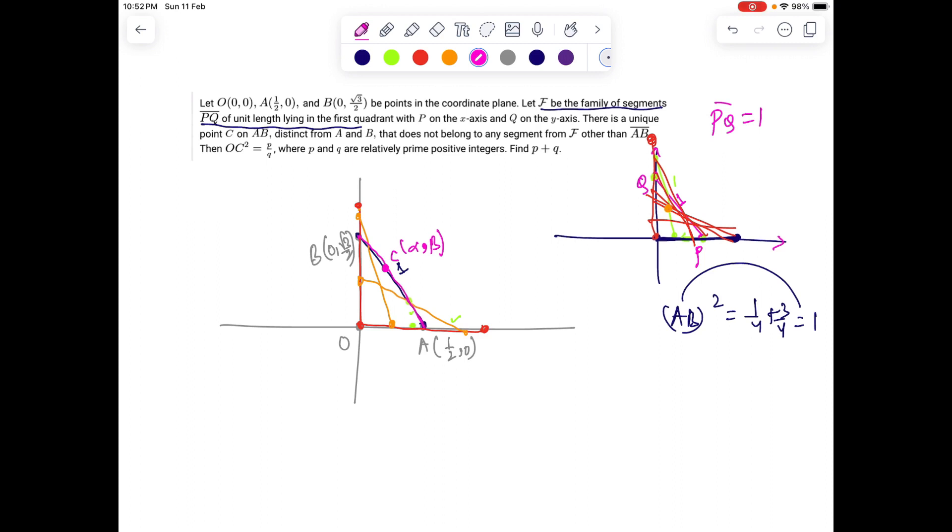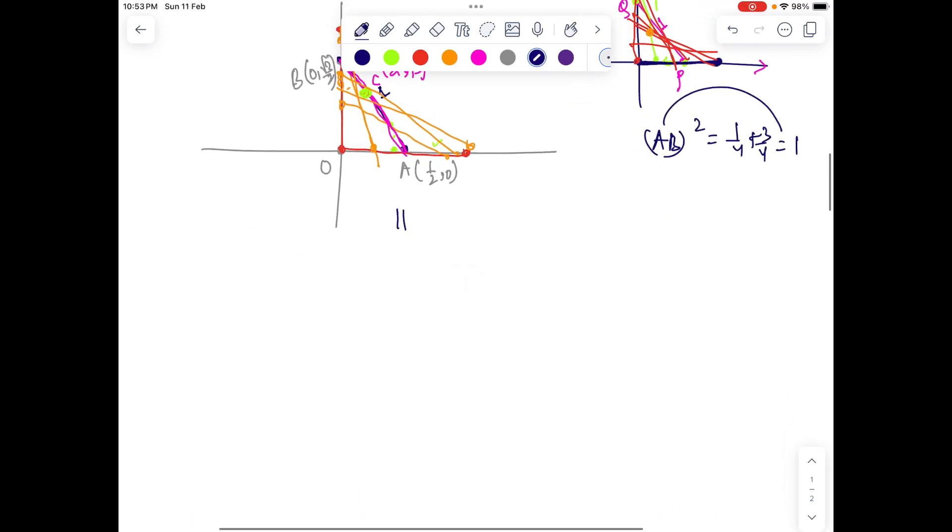Now the question is, is there a unique point C, alpha comma beta, on the line segment AB such that no other configuration of ladder will pass through that magical point C? It means if I make the ladder slide, it will definitely miss that point C. There is just a unique line AB containing a special point C, and no other family members will pass through that C. That makes this problem really interesting.